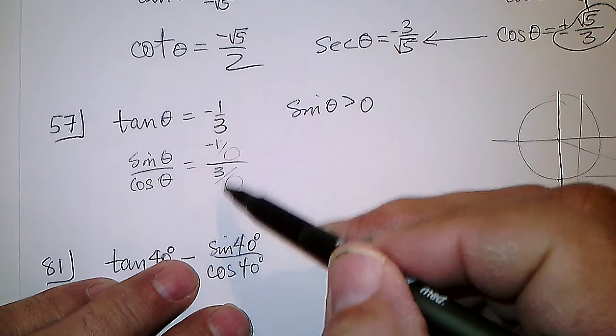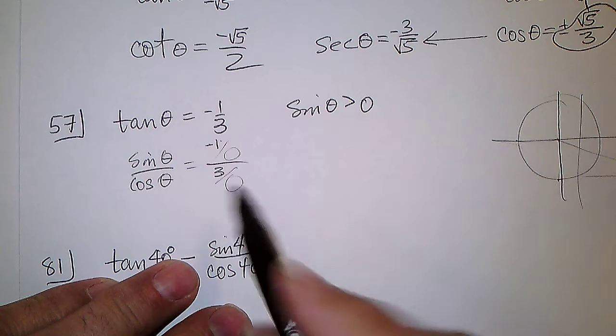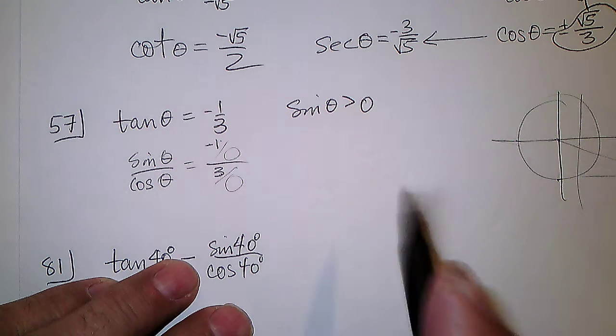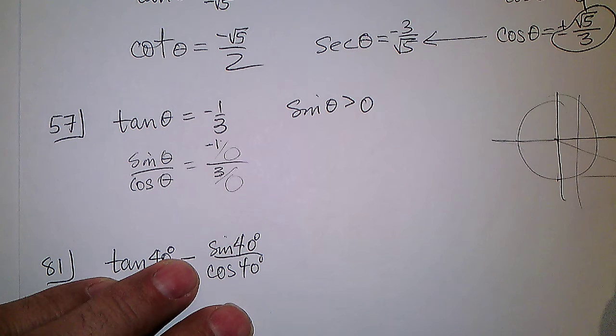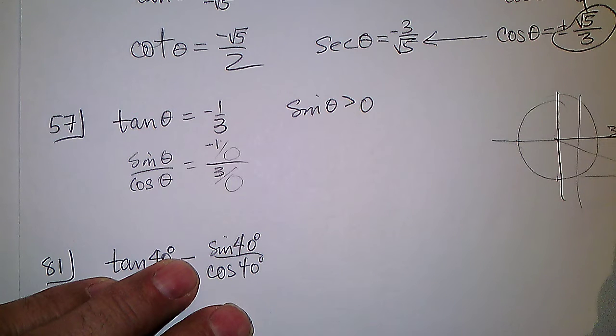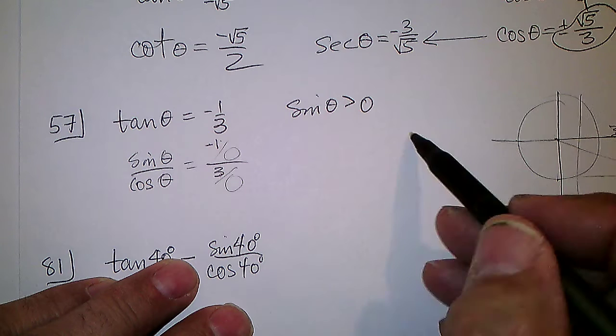So the sine can't be minus 1 and the cosine 3, they're too big, we have to shrink them down. So let's find out how far that would be if we went 3 in the x and minus 1.